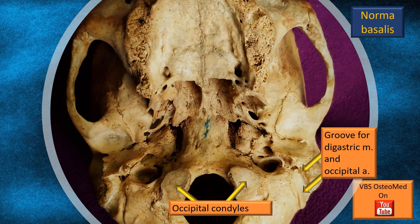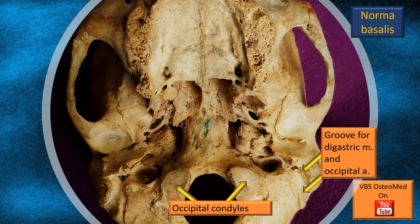Looking at the midline, on either side you can see two large condyles almost abutting the foramen magnum. They are the occipital condyles. They articulate with the first cervical vertebra, namely the atlas, forming the atlanto-occipital joint.